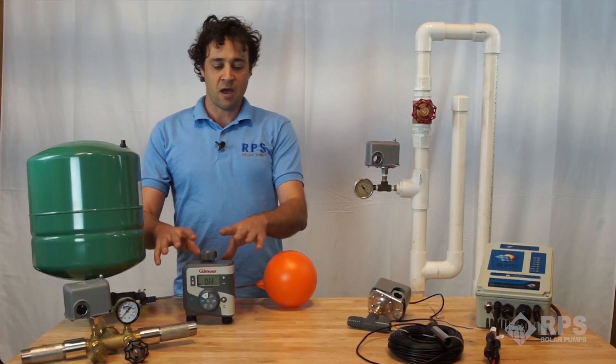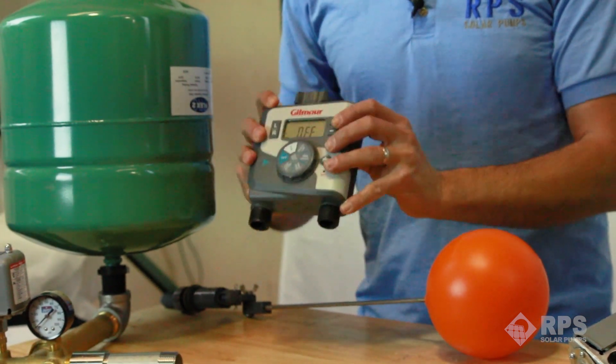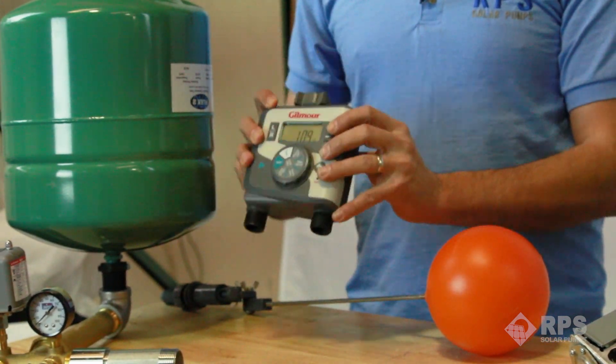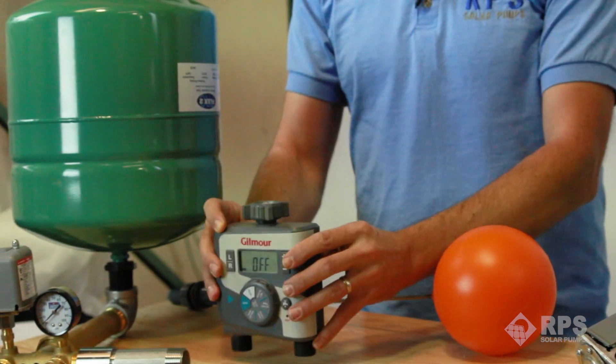The second use we have is off-grid irrigation. This is just a standard DC timer that opens and closes a valve and that will cause the pressure to spike and shut the system off.